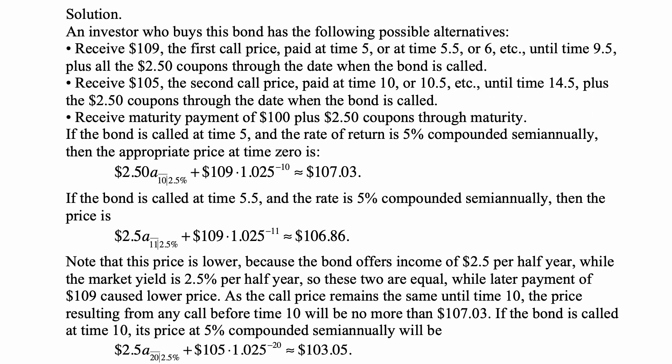And here's a solution. An investor who buys this bond has the following possible alternatives: receive 109, the first call price, paid at time 5, or at time 5.5, or 6, etc., until time 9.5,